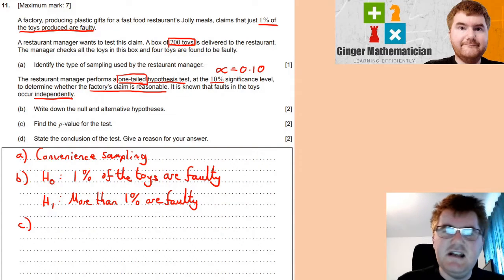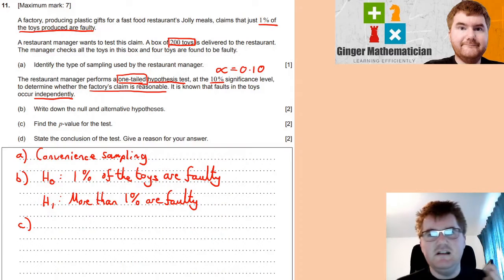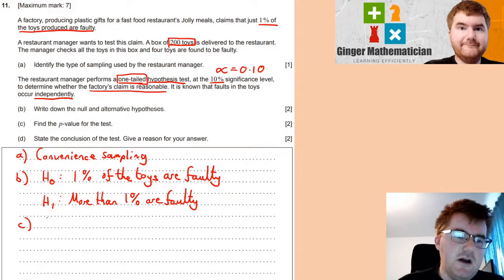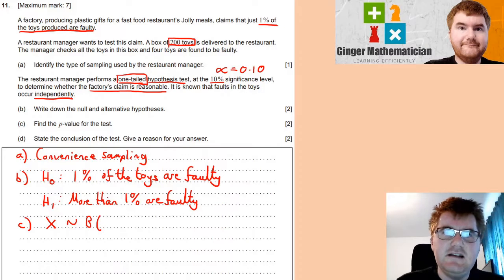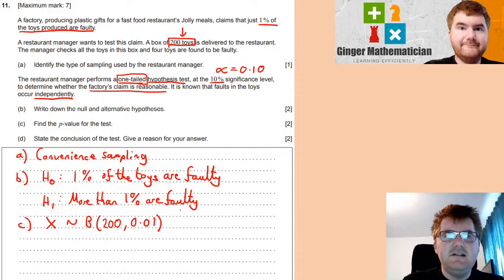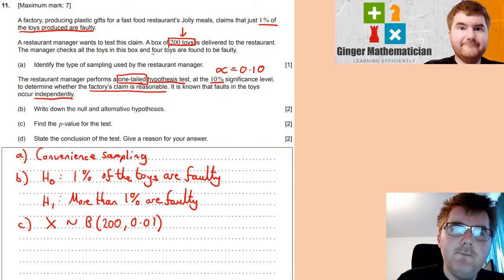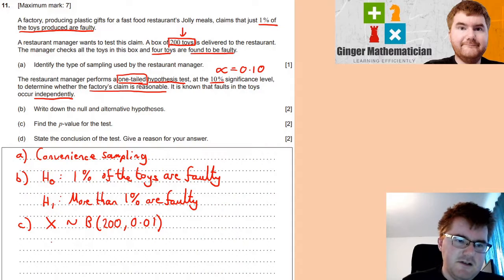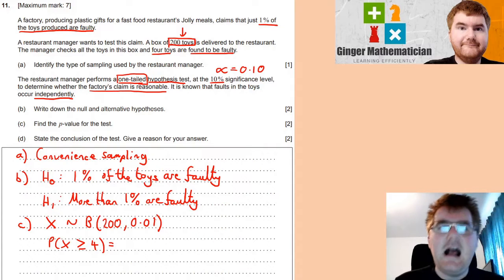From that, we are going to then do a hypothesis test. So, we need to decide what distribution we're using here. This is a kind of question where it's either faulty or it's not faulty. This kind of yes or no problem, which means we are going to use a binomial distribution. So, distribution we're going to use, this involves then knowing the sample size that we have. I put that in the box here, 200, that's our sample size. And then the probability of it being faulty is equal to 0.01. So, what we need to do is work out the probability that x is greater than or equal to four, so four or more.